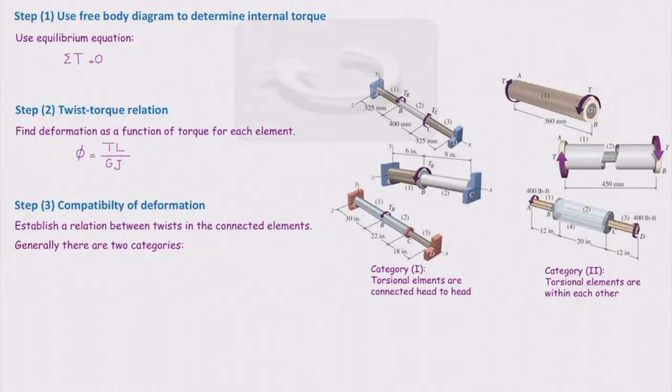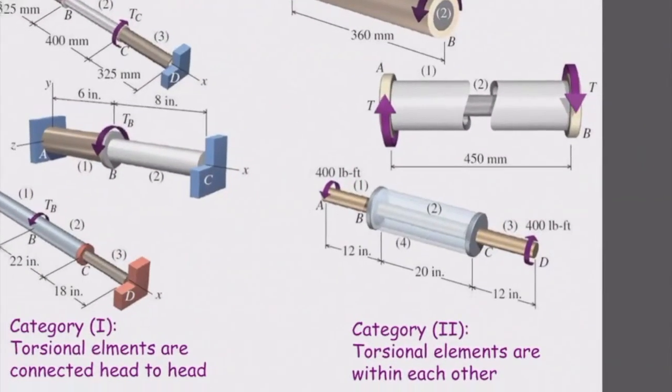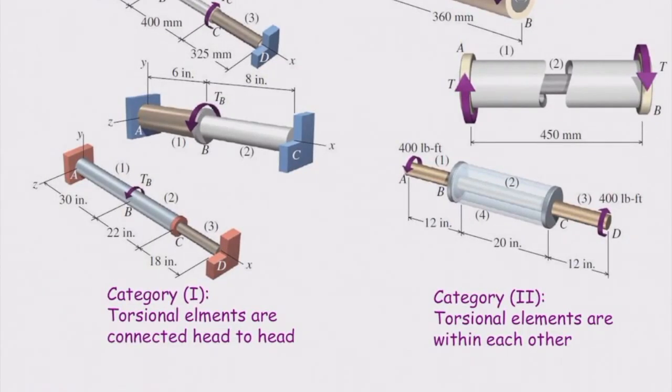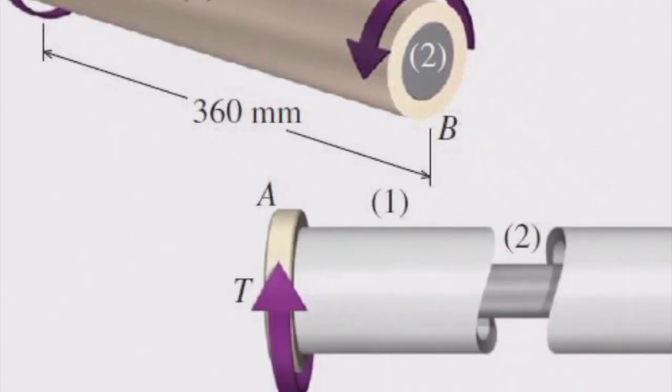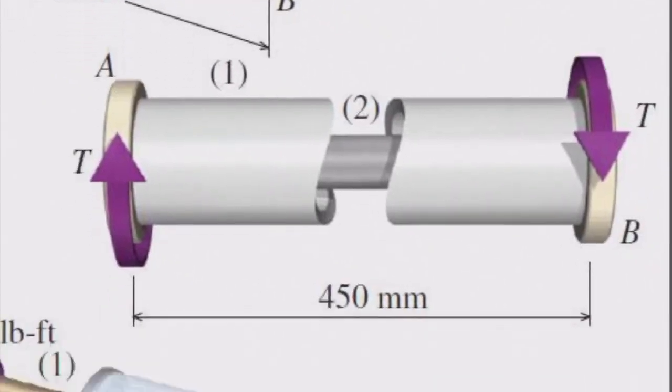The second category is like this. In this category, one element is within the other element, like this figure. The tube on the outside is surrounding the shaft inside and they are fully connected together. So what is the relation between the twists of these two? They are fully attached together. So the twist of the outer element equals the twist of the inner element. So phi 1 equals phi 2. Same is true for this one or this one.